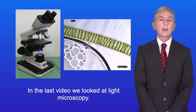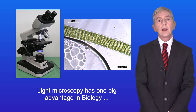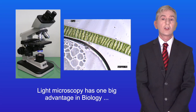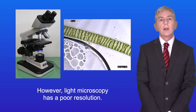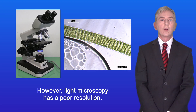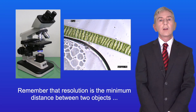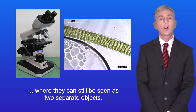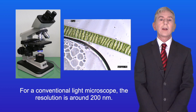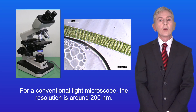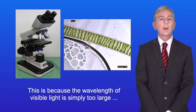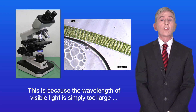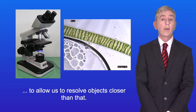In the last video we looked at light microscopy. Light microscopy has one big advantage in biology, which is that we can look at living cells. However, light microscopy has a poor resolution. Remember that resolution is the minimum distance between two objects while they can still be seen as two separate objects. For a conventional light microscope, the resolution is around 200 nanometers. This is because the wavelength of visible light is simply too large to allow us to resolve objects closer than that.